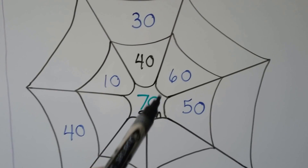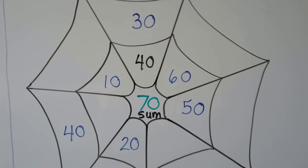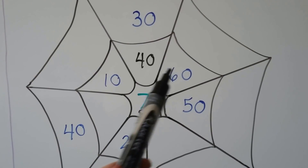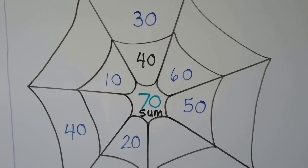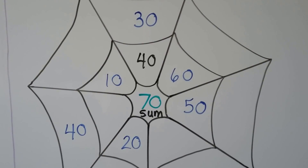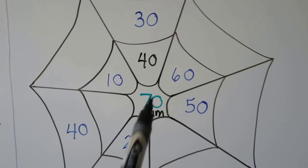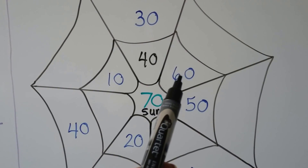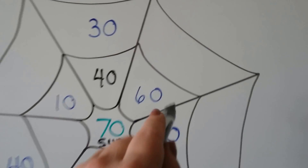What can we add to sixty that will give us a sum of seventy? We have six tens and we need seven tens. We only need one more ten, don't we, to go from six to seven? So we need one ten.